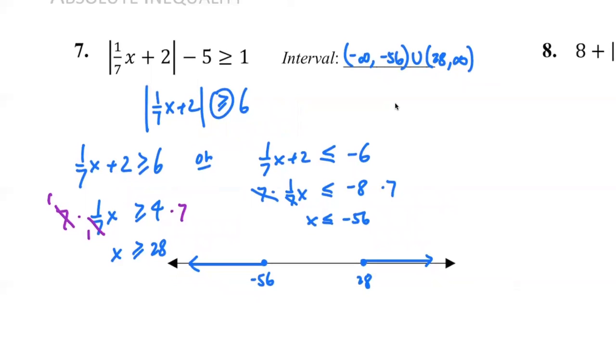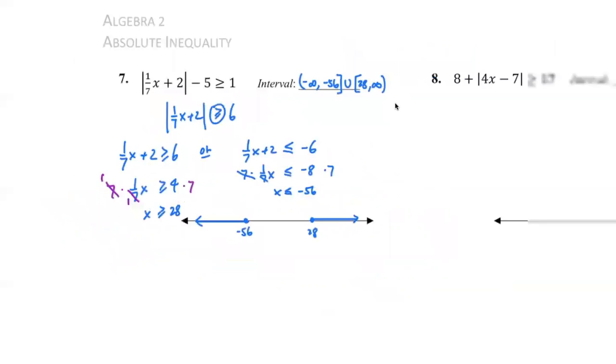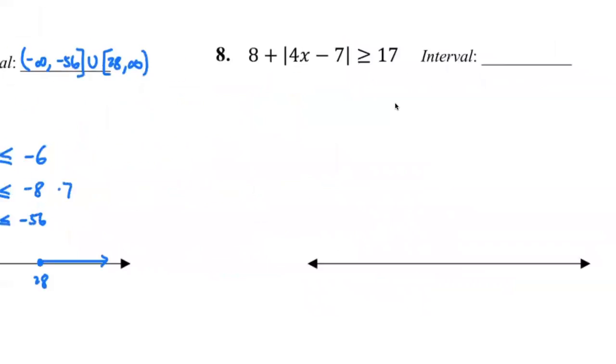The mistake is right here. It should not be parentheses, it should be brackets because they're closed circles. So right here we have closed circles with the equals, so we do include negative 56, we do include 28 in our solution set, so therefore we would have a bracket for it. Okay, that's number seven.